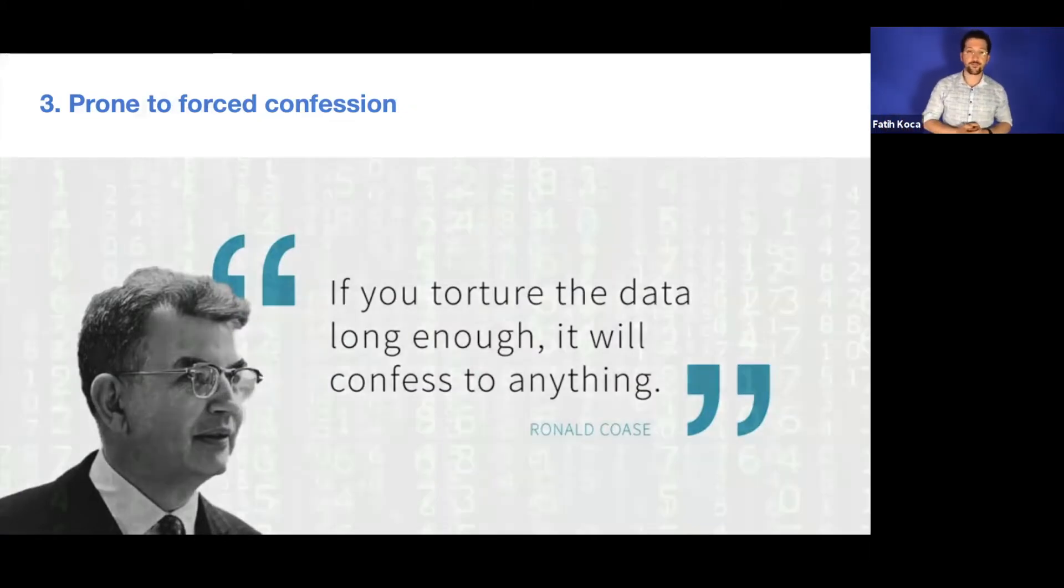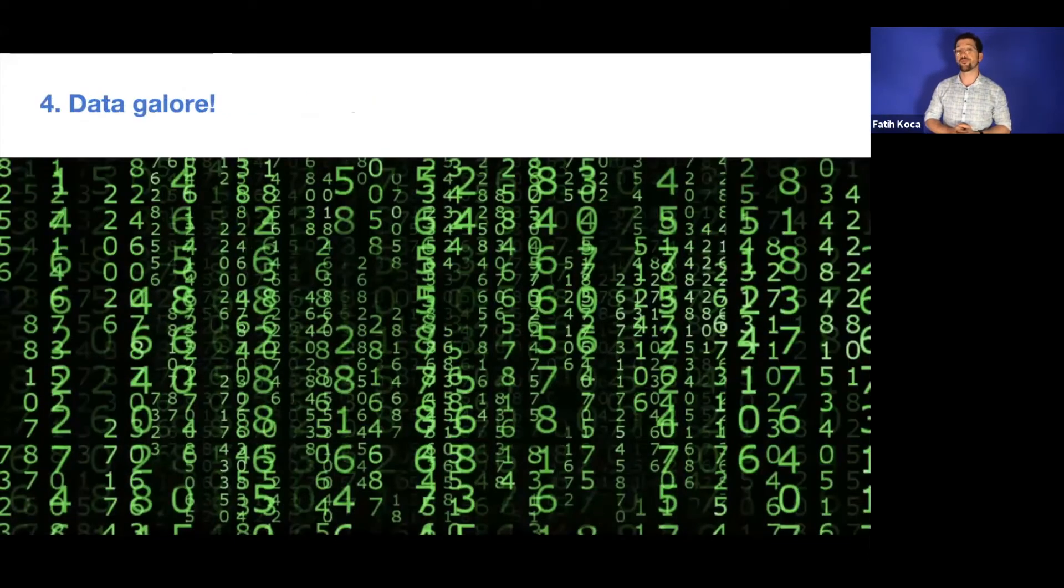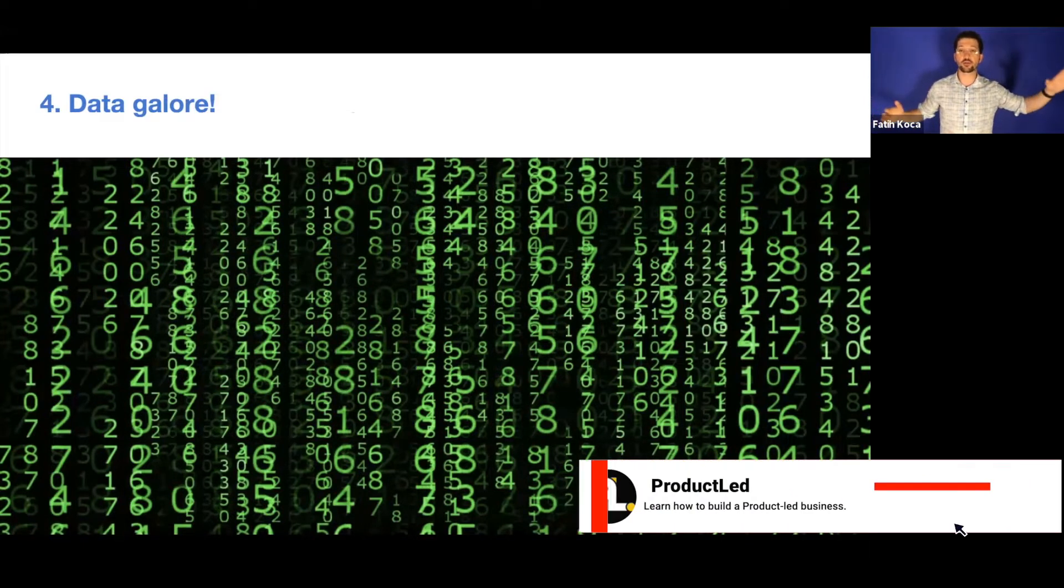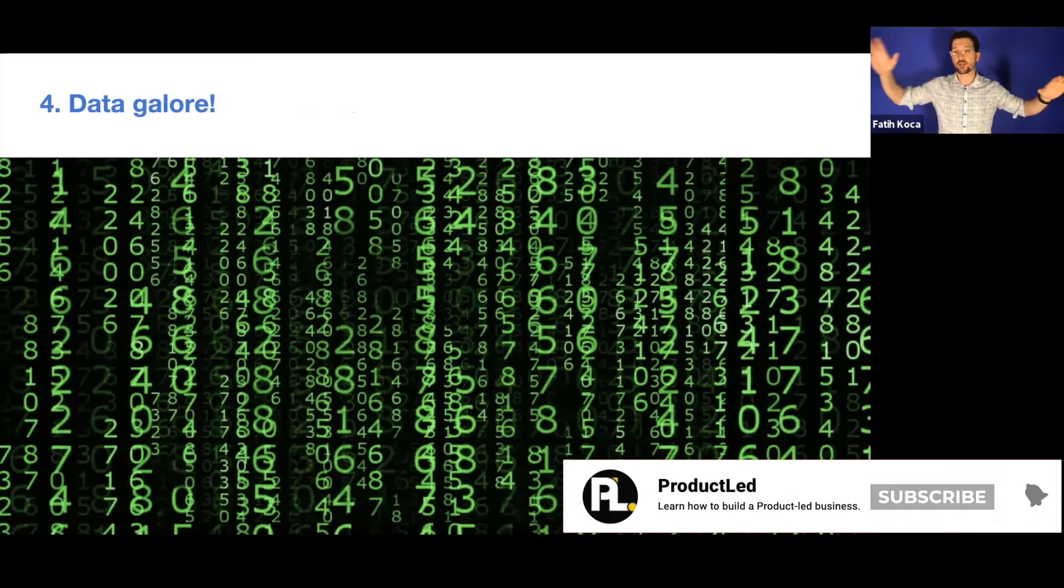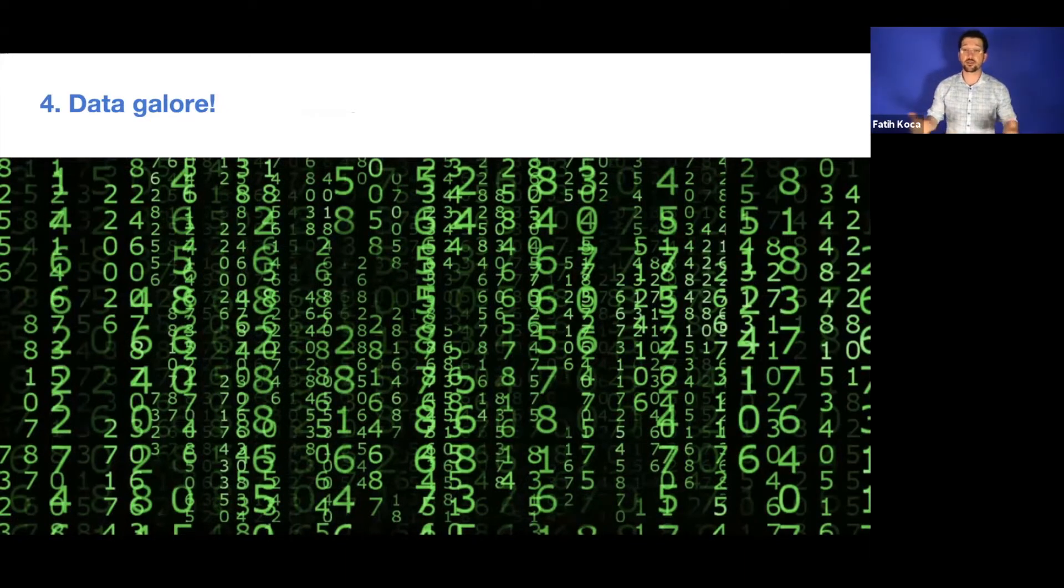Last, data galore. We have data flowing from everywhere. Different data sources, marketing channels, product, customer service, online, offline. So data is abundant. It's a hot topic, but it can be a hot mess if we don't apply effective strategies.